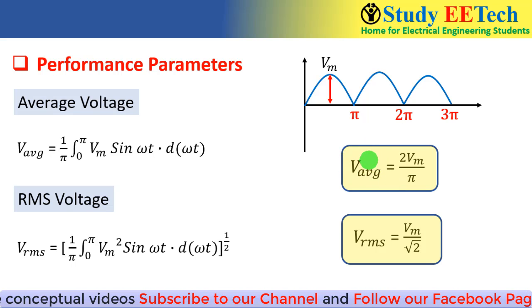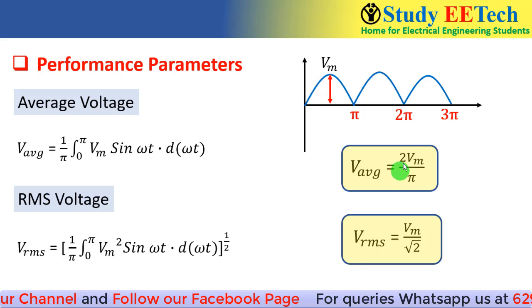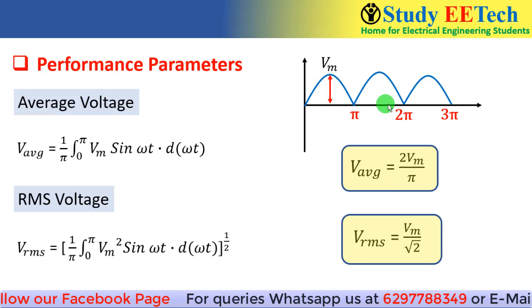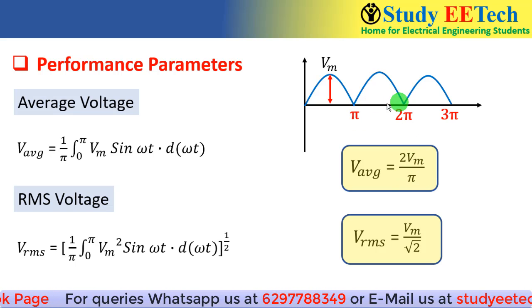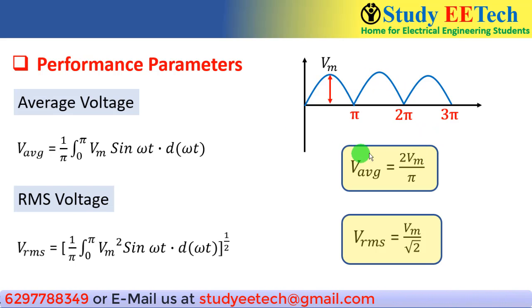And we see that the average voltage in case of half wave rectifier was Vm/π. Now we are getting 2Vm/π. There in the negative half cycle we did not get any voltage. Now we are getting the voltage. So the average voltage is just double of the half wave rectifier. And the RMS value of the half wave rectifier was Vm/2. Now the RMS voltage for full wave rectifier is Vm/√2. This is the difference between the average voltage and RMS voltage with respect to the half wave rectifier.